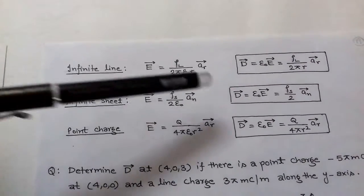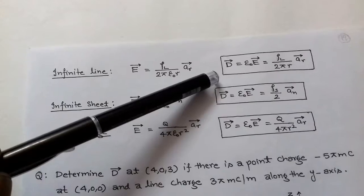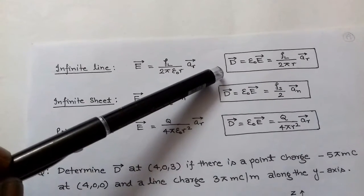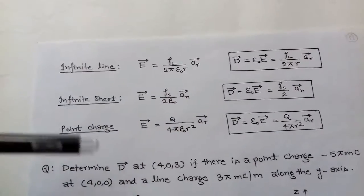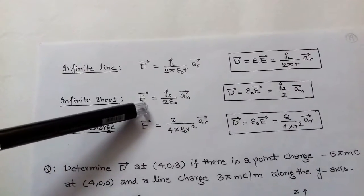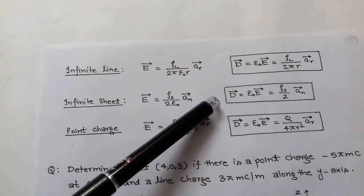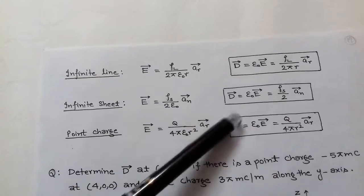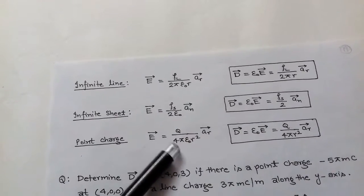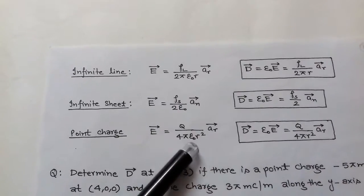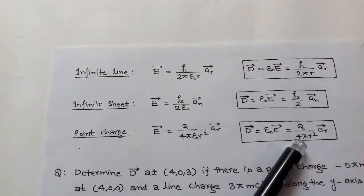In case of an infinite line, D = ε₀E. Moving ε₀ to the left side, the formula of electric flux density for an infinite line becomes D = ρl upon 2πR in unit vector R. In case of an infinite sheet, electric intensity is ρs upon 2ε₀ in the normal direction, and electric flux density D = ε₀E = ρs upon 2 in the normal direction. For a point charge, E = Q upon 4πε₀R² in the direction of R, so D = ε₀E = Q upon 4πR² in the direction of R.